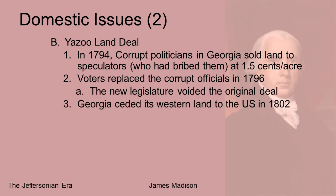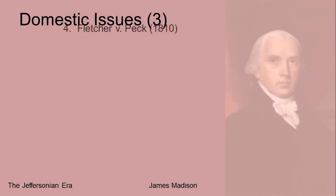In 1802, Georgia ceded all that land to the United States government, and the United States inherited a problem with it. The problem was who owned this land out west, because the individuals and businesses that had bought that land had turned around and sold it to other people at a profit. If the legislature voided the original contract, do the people in the second sale have claim to that land? Technically no, because the state of Georgia would still have owned that land. Georgia had been involved in a contentious legal battle trying to decide who gets what money for the land and who deserves to be compensated. This ended up producing a Supreme Court case.